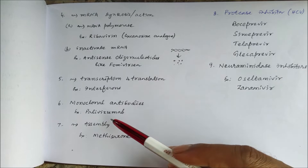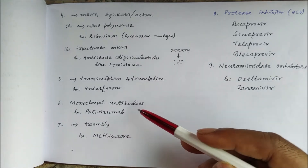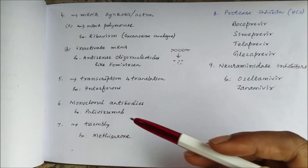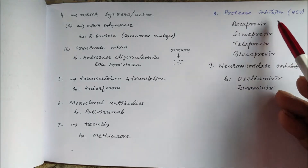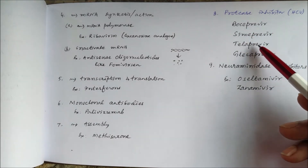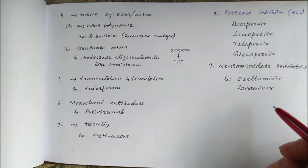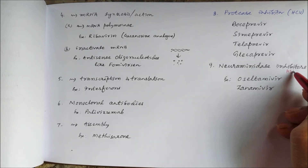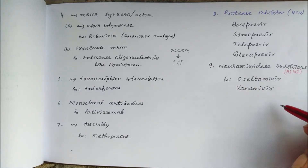Monoclonal antibodies like palivizumab can be used against viruses. Assembly can be inhibited by drugs like methisazone. Protease inhibitors for hepatitis C include boceprevir, simeprevir, telaprevir, and grazoprevir. For H1N1 or swine flu, neuraminidase inhibitors like oseltamivir and zanamivir are used.